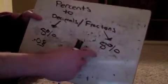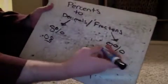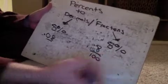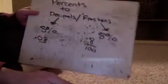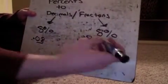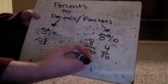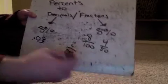Over here on the fraction side, 8%. Again, all we're doing is putting it over 100. That's all we need to do is put it over 100. 8 over 100 divided by 2 would be 4 over 50 divided by 2 would be 2 over 25.